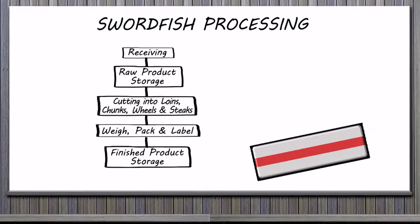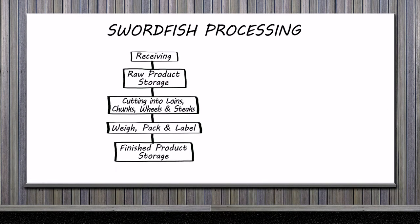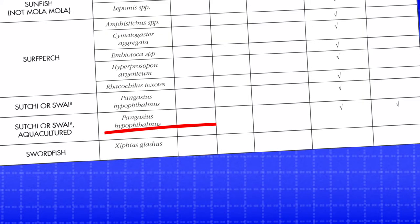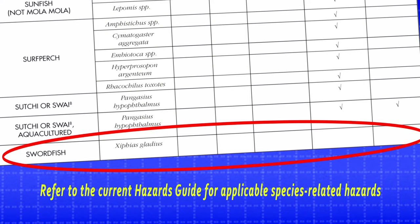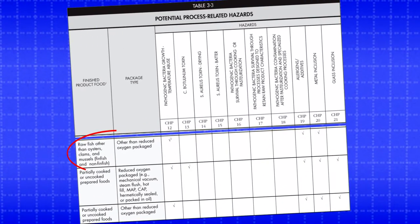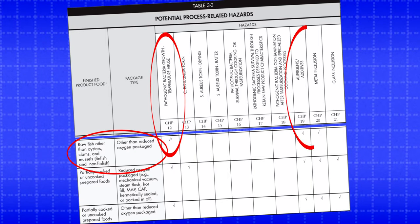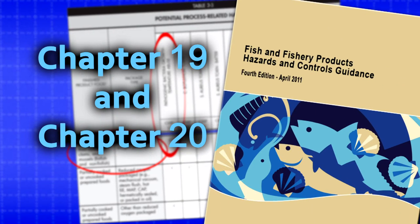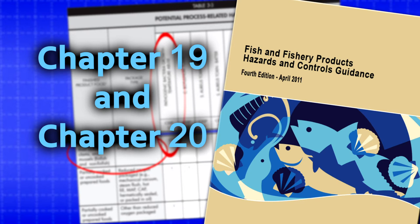This processor has listed each step in the flow diagram and combined the weigh, pack, and label steps as a single processing step. According to Table 3-2 in the Hazards Guide, swordfish has no potential species-related hazards. However, Table 3-3 shows that raw fish not in reduced oxygen packaging has pathogen growth and toxin formation, allergens, and metal inclusion as potential process-related hazards. Chapters 19 and 20 of the Hazards Guide address allergen and metal inclusion hazard controls.